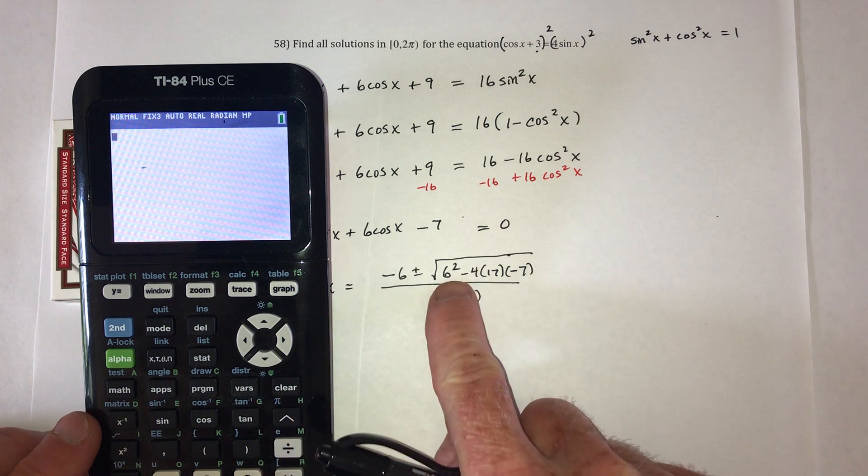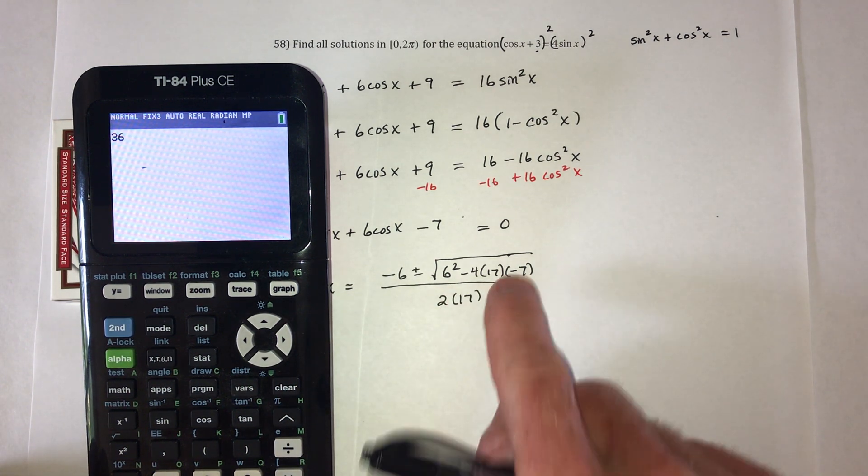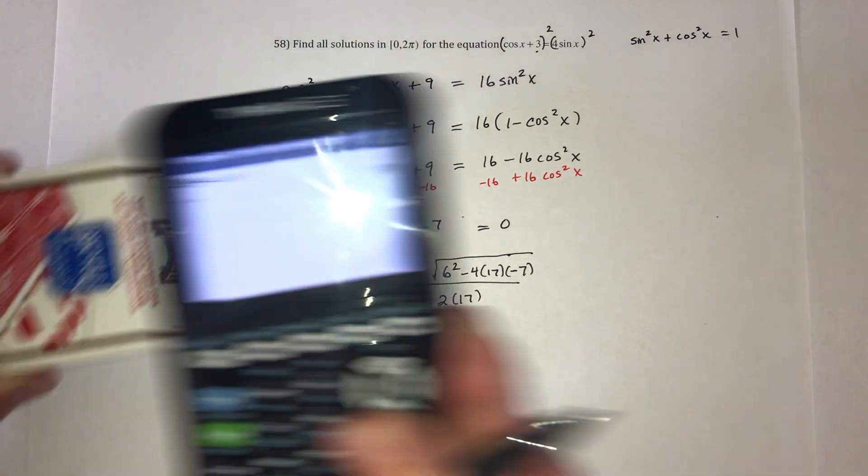Let's see, how much is inside the square root? So inside the square root, that would be 36. And then this would be a negative times negative, so that's positive. 4 times 17 times 7. So there's 512 inside the radical.